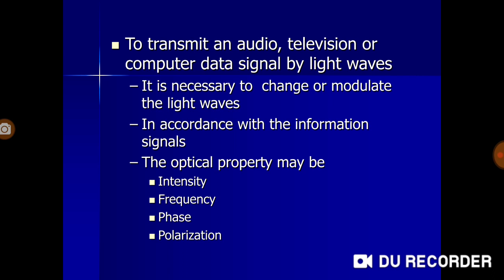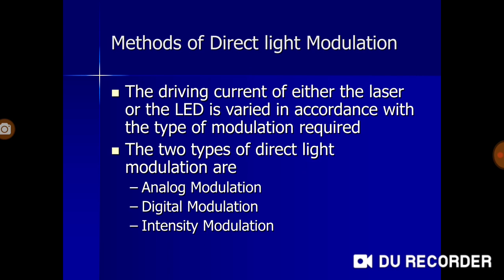The methods of direct light modulation — direct light modulation means the driving current of either the laser or LED is varied in accordance with the type of modulation required. The two types of direct light modulation are analog modulation and digital modulation. We'll take a glimpse of both analog and digital.